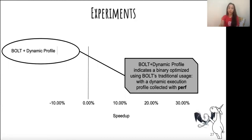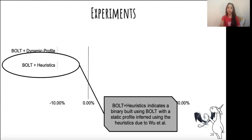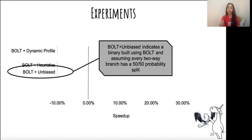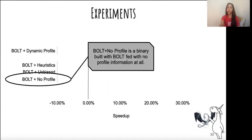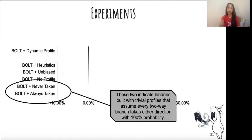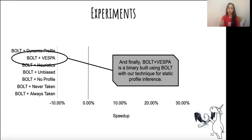We also compare against several other candidate binaries. The first of them is a binary built using BOLT with its typical dynamic profile. We generate a binary using BOLT with a static profile built using the heuristic due to Wu and Larus. BOLT plus unbiased is a binary built using BOLT with a profile that simply predicts 50-50% for every branch. BOLT plus no profile is our null hypothesis, which is a binary built with BOLT with no profile information at all. And finally, we have the two final comparison points, which are binaries built using trivial profilers, which predicts 100% probability in either direction. BOLT plus Vespa indicates the binary built using our technique.